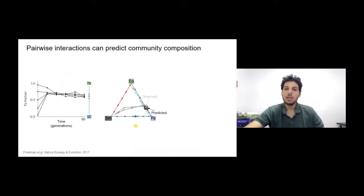Here I'm showing a ternary plot showing the fractions of each of the three species, with nodes indicating a community composed entirely of one species and the center indicating an even abundance of all three species. You can see that the prediction based on the pairs — indicated by this square — matches very well the observed composition of trios, indicated by these dots.